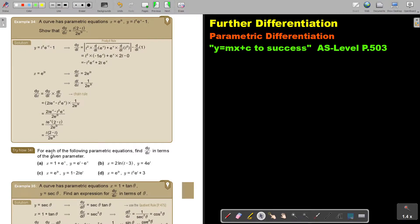Let's look at another example. A curve has parametric equation x equals e to the power of 2t and y equals t squared e to the power of negative t minus 1. Show that this is the differentiated equation.